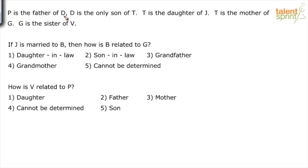P is the father of D. Let us draw the family tree. P is the father of D — so D is here, and P is the father of D. So P is a male person.